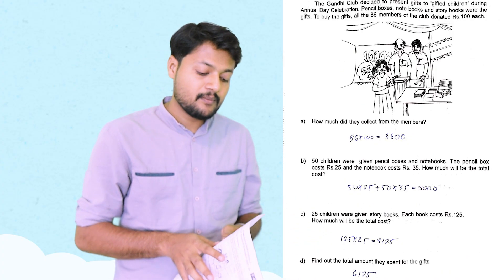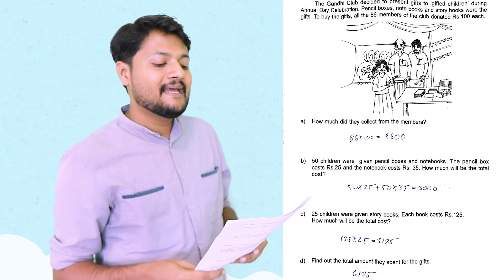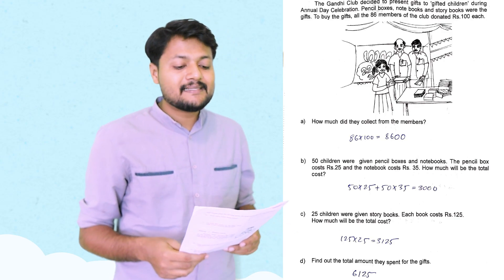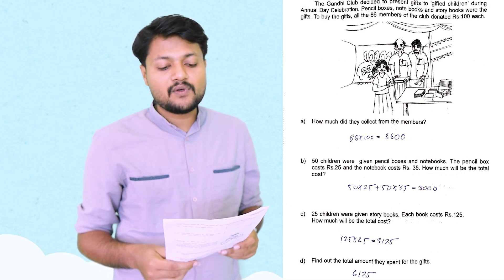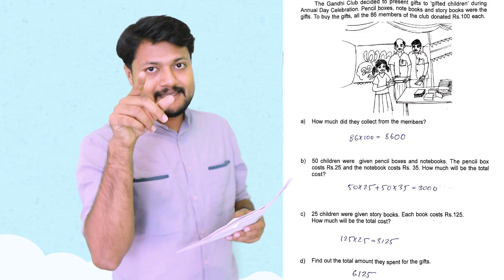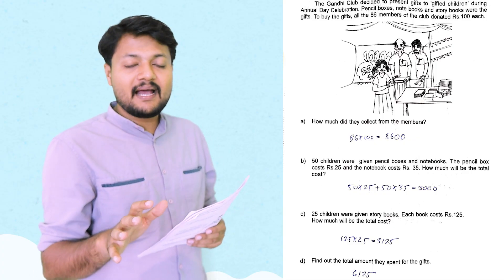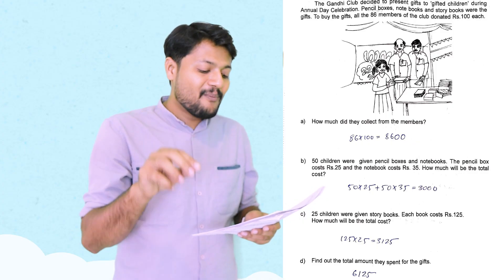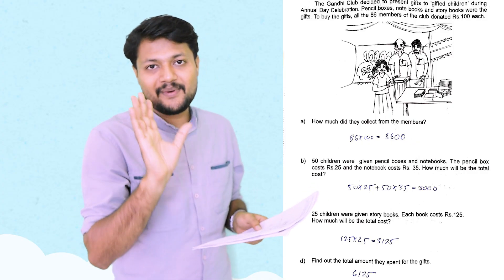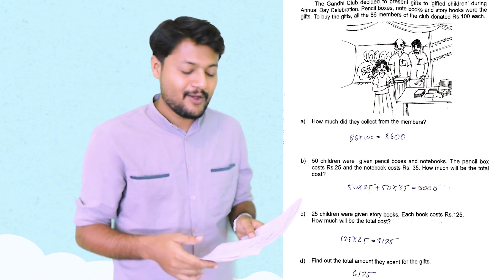This is the annual day celebration. The Gandhi club decided to present gifts to gifted children during the annual day celebration. Pencil boxes, notebooks and story books were the gifts. To buy the gifts for all the 86 members. 86 members of the club donated Rs. 100 each. How much did they collect from the members? 86 into 100. That is equal to 8,600.